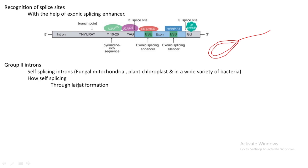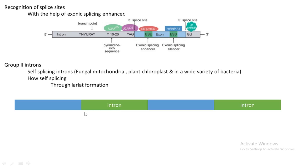By forming such a lariat-like structure, the group 2 introns carry out splicing. This is the pre-mRNA, and in it we can see introns and exons — the blue portions are exons. Each exon and intron has a 5' end and a 3' end. For each exon and intron in sequence, there is a 5' end and a 3' end accordingly.